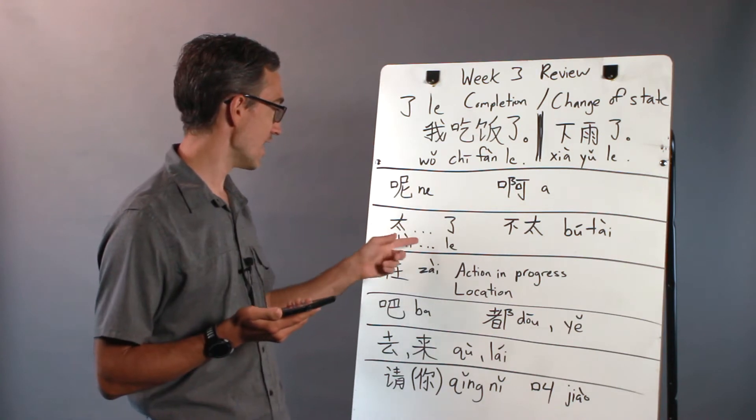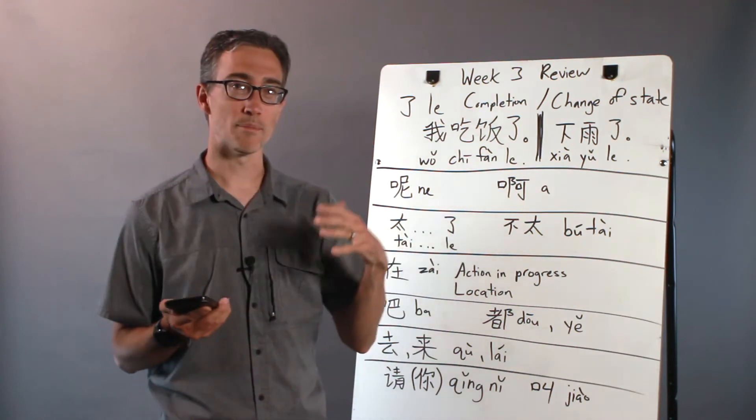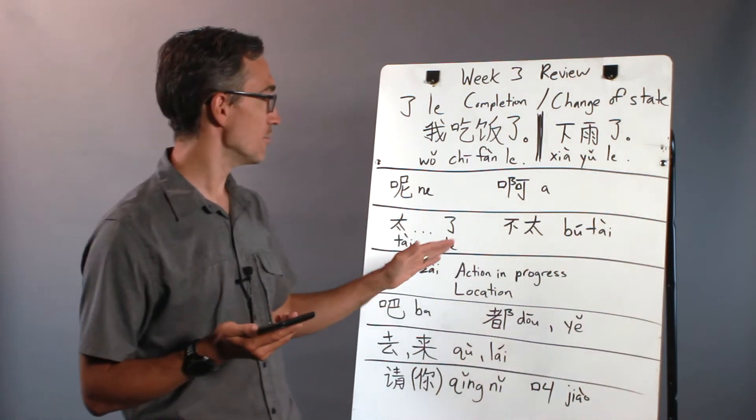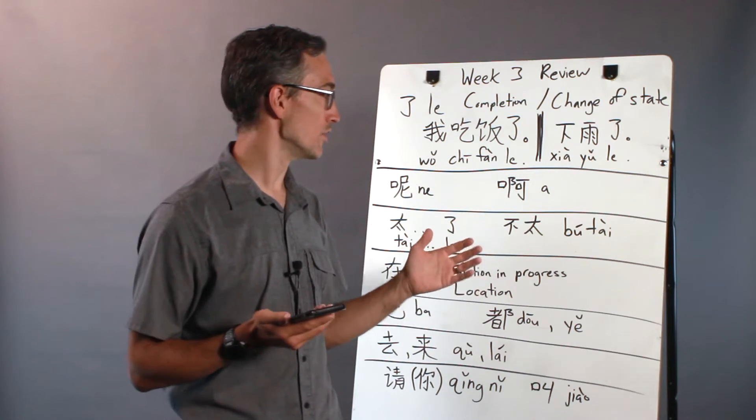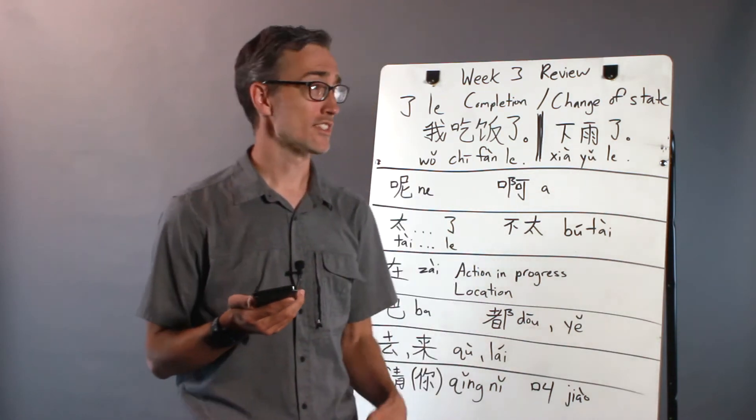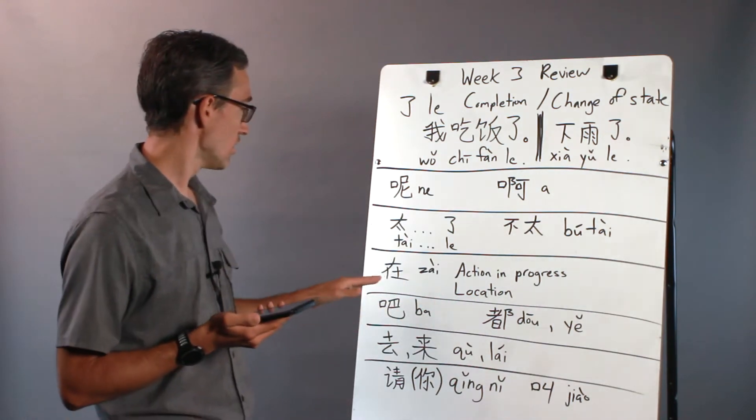So an adjective goes in here. It's 太 adjective 了 when you're making a positive kind of exclamatory sentence. And then 不太, when you're negating something you're saying not very or not too. You can say 他不太高, he's not very tall.